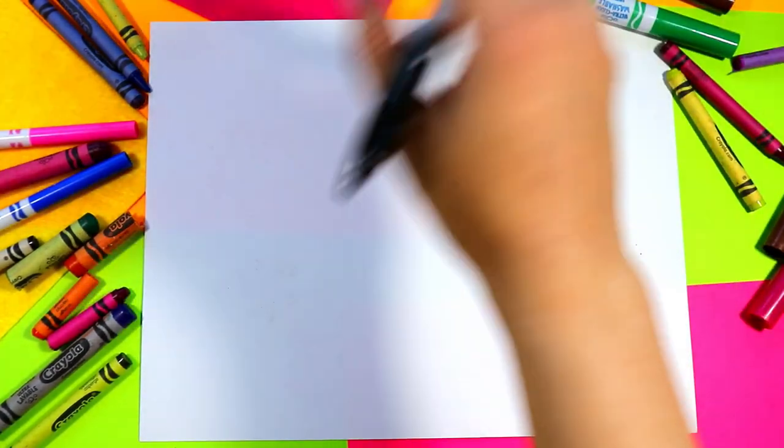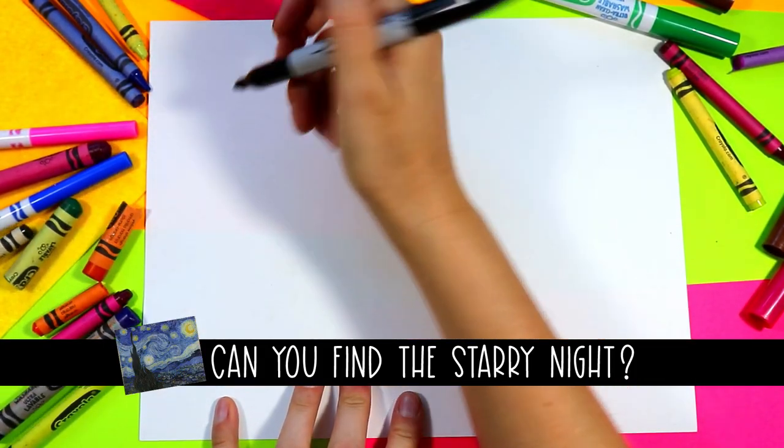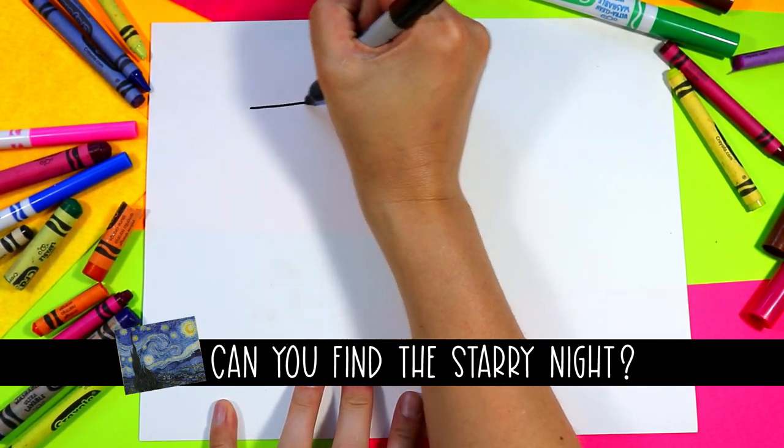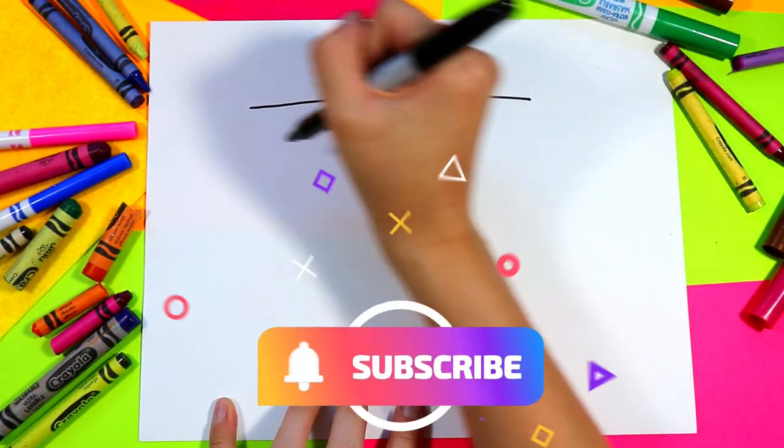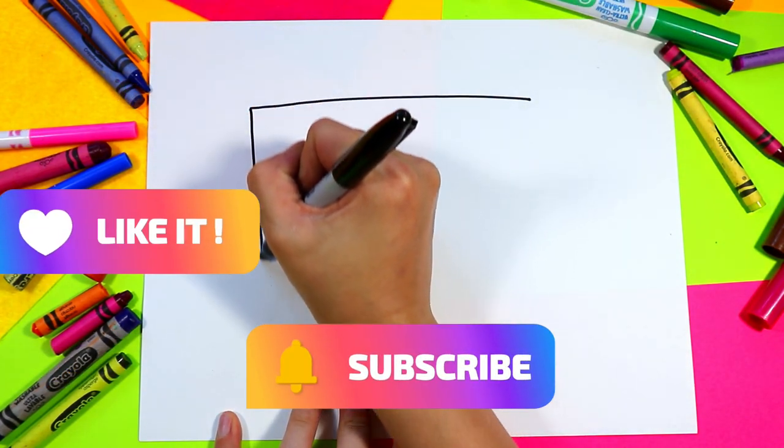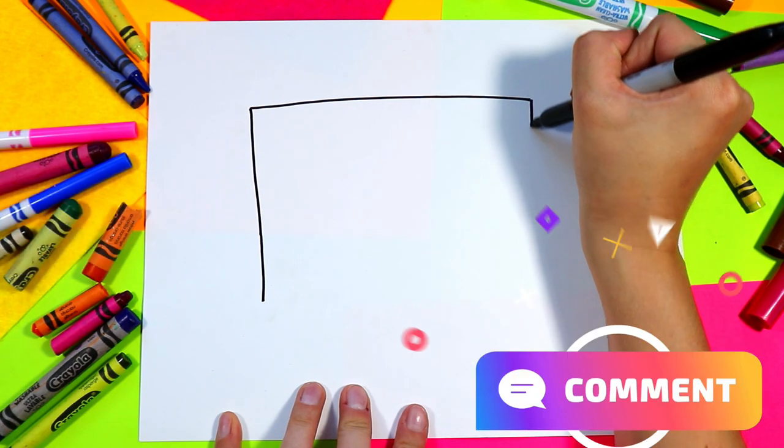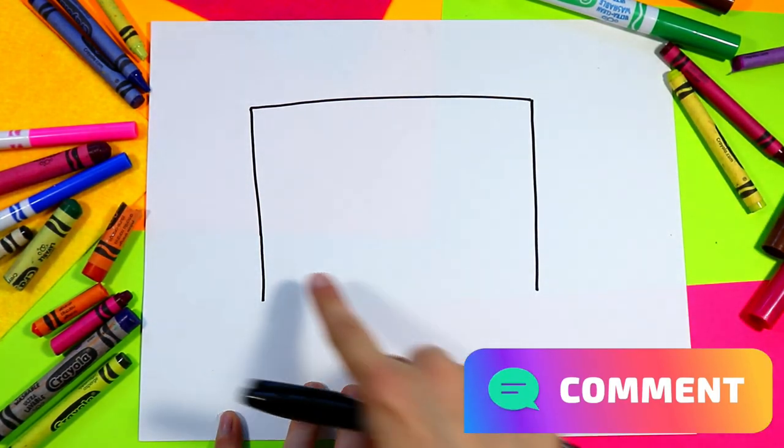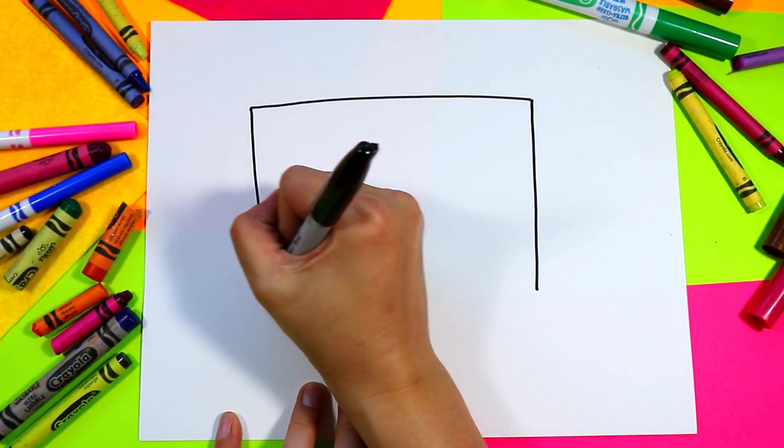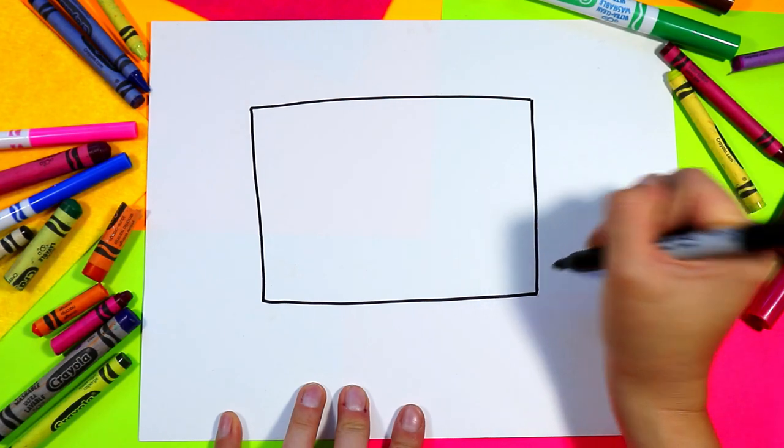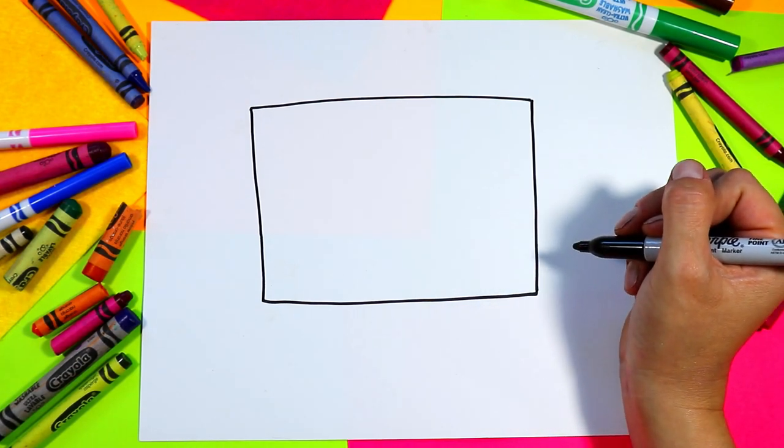Alright, we're gonna begin our flag. We're gonna first be drawing our rectangle. We're gonna draw one line across, two lines down, and we're gonna connect the bottom. And if it's not a perfect rectangle that's okay, as a flag is waving in the wind anyway.